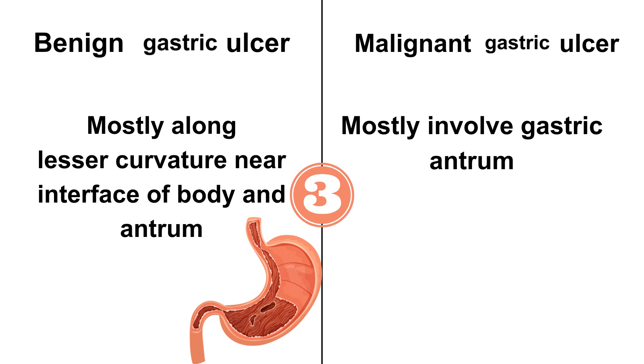Benign mostly occurs along the lesser curvature, near the interface of the body and antrum of the stomach, while malignant mostly involves the gastric antrum.